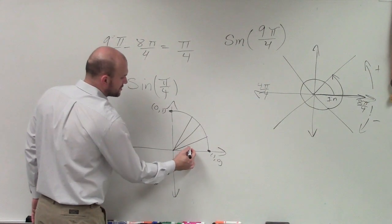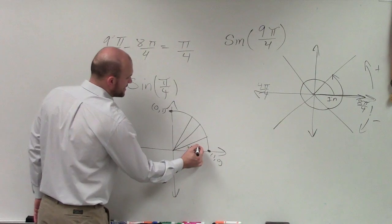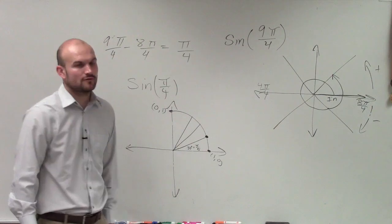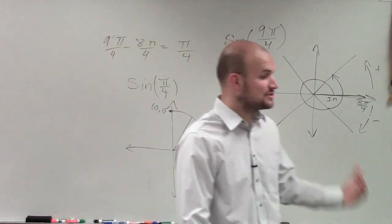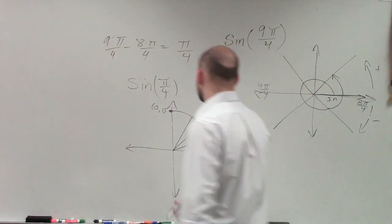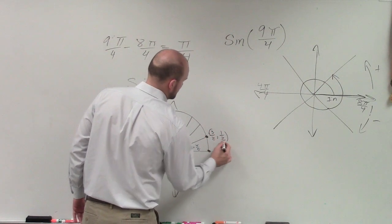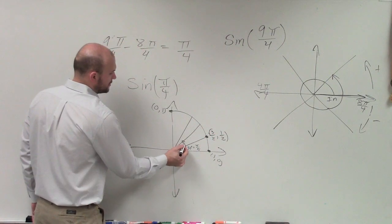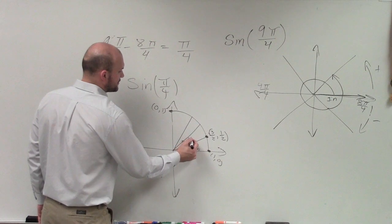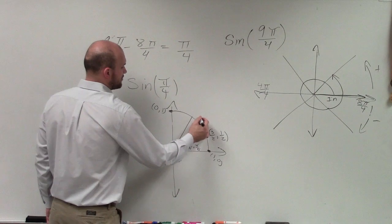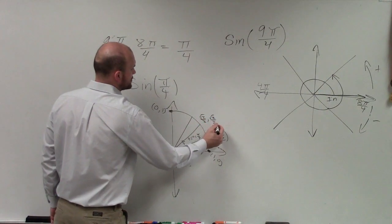The first angle was 30 degrees, which is the same as π over 6. The coordinate points for a point on the unit circle at that angle is √3/2, 1/2. For this angle, which is 45 degrees or π over 4, the coordinate point is √2/2, √2/2.